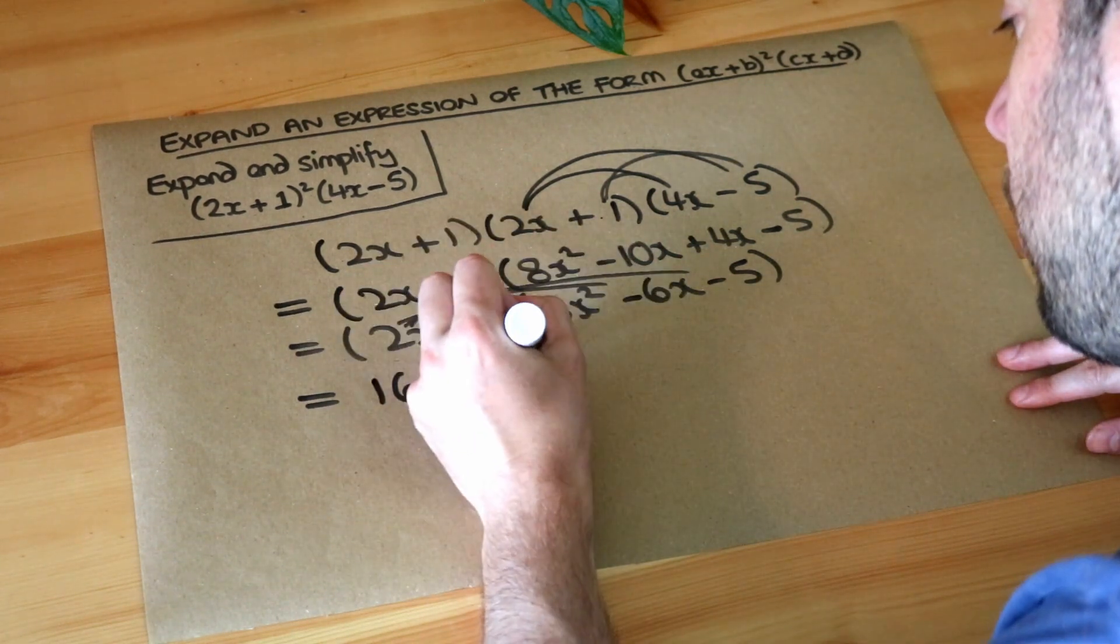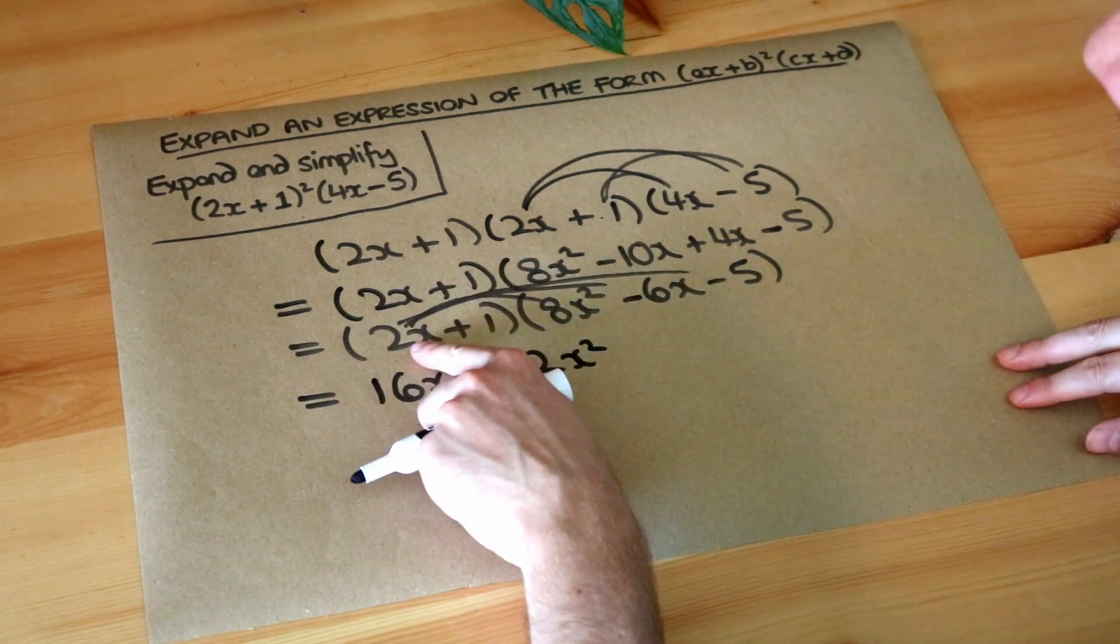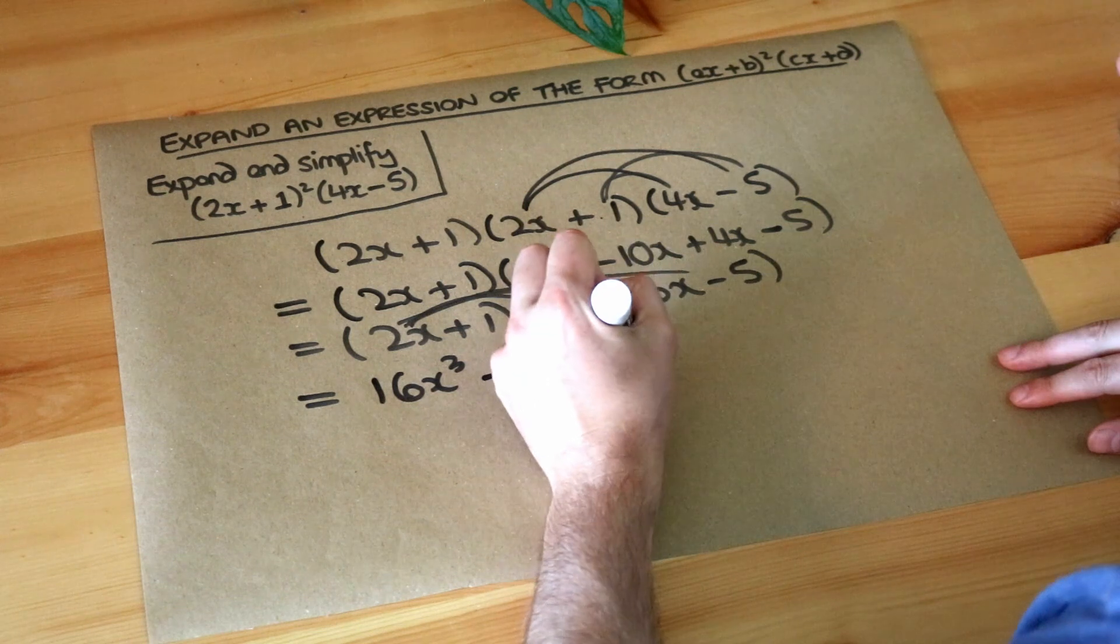2 times 6 is 12. And we've got x times x which is x squared. And finally 2x times minus 5 is minus 10x.